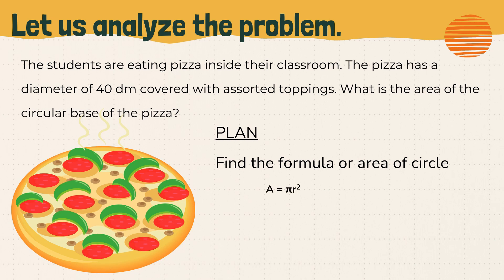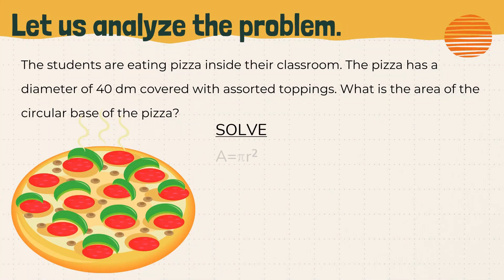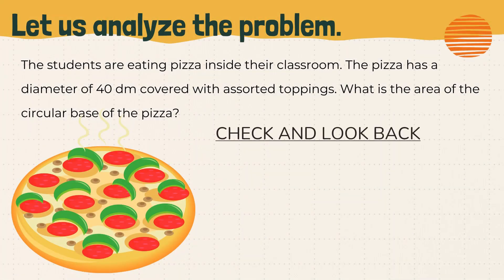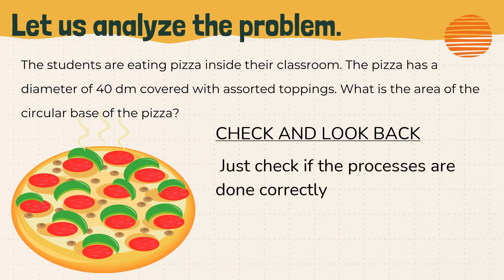Plan: find the formula for the area of a circle. Formula: A equals pi r squared. The operation is multiplication. Solve: following the formula, A equals pi r squared. Substitute: A equals 3.14 times 20 squared, since the radius is half of 40, which is 20. So 20 squared equals 20 times 20 equals 400, multiplied by 3.14, is equivalent to 1,256 square decimeters. Check and look back: verify that all processes and decimal point placement are done correctly.